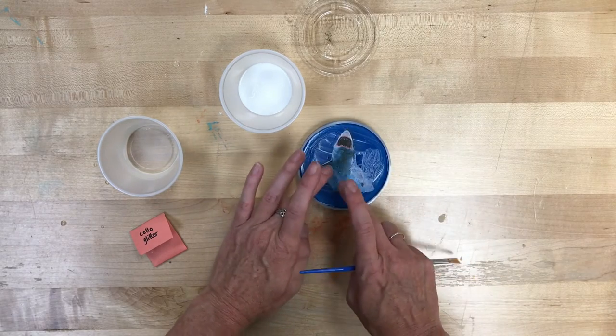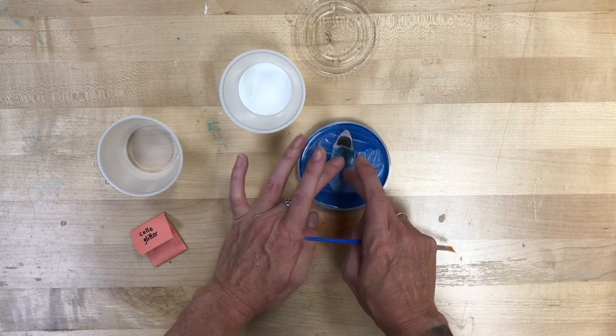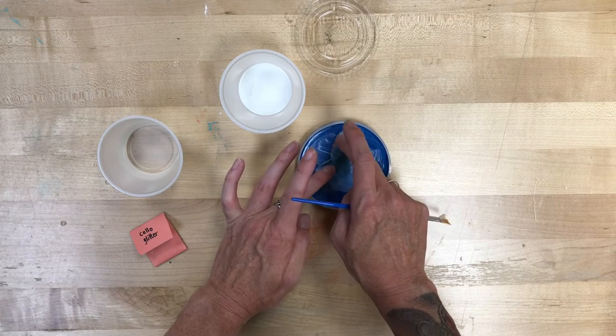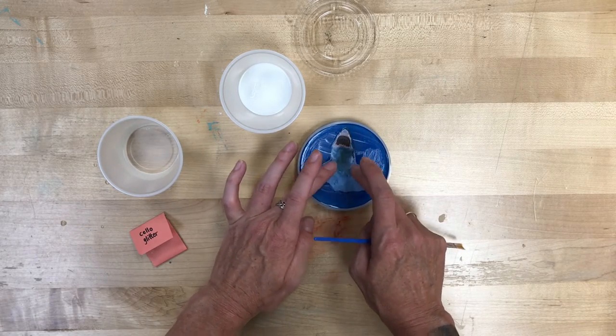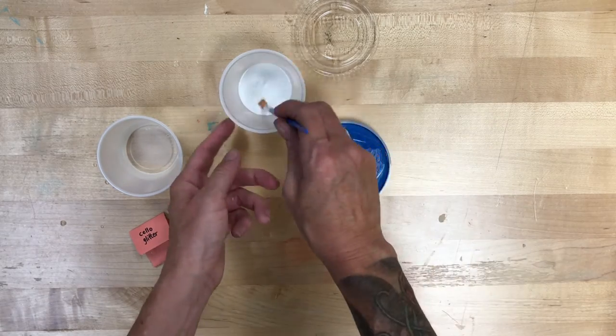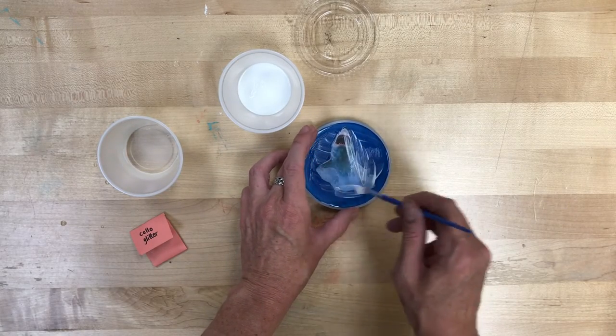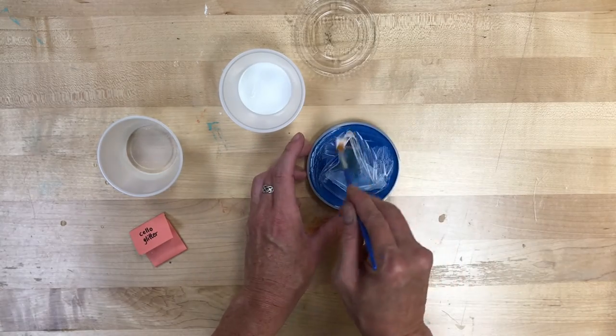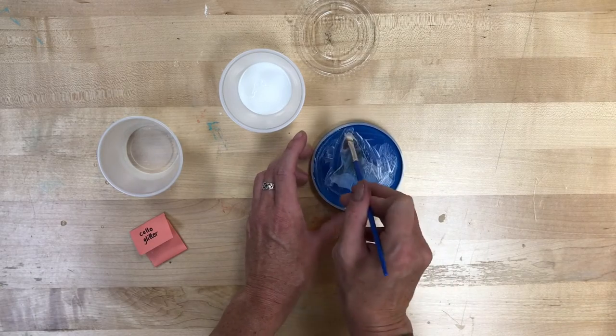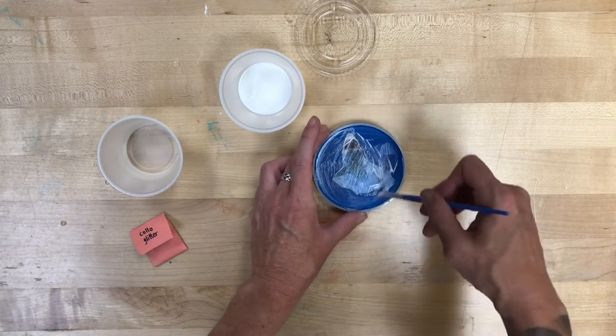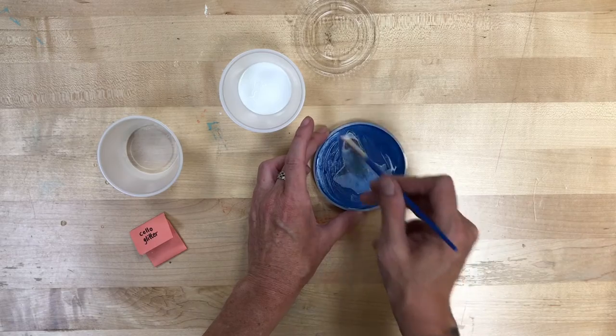And then we're going to stick it wherever you would like it to end up on that coaster. I'm going to put mine right in the middle because I know I want room for the glitter and the coming out of the water splashiness. So make sure that that's adhered in place, and then we're going to paint over the top of all of it with Mod Podge. And we're going to let that dry, and then we're going to do it two more times, letting it dry fully in between.